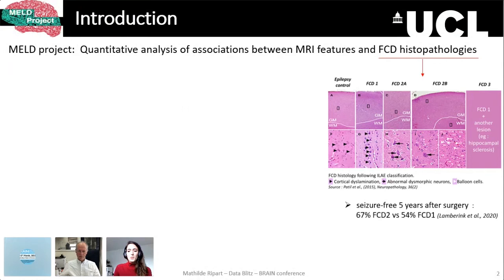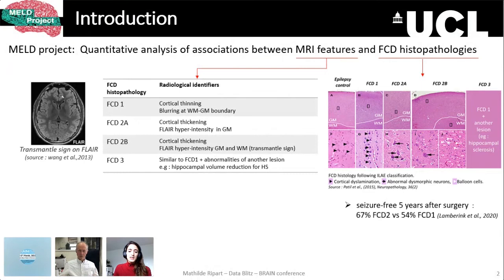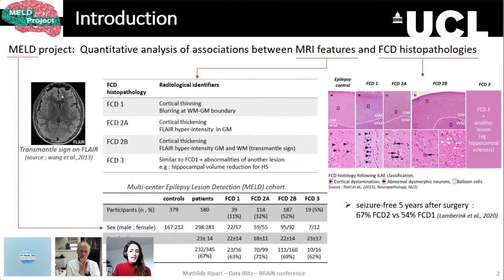To identify these lesions on MRI, previous studies have described associations between FCD histopathologies and MRI identifiers on T1-weighted and FLAIR contrast, such as the transmantle sign, which is a FLAIR hyperintensity present in the white matter for FCD2B only. However, these studies are often limited by a small cohort or focused only on one histopathology. This is why today I'm going to present a larger analysis on FCD1, 2A, 2B, and 3.